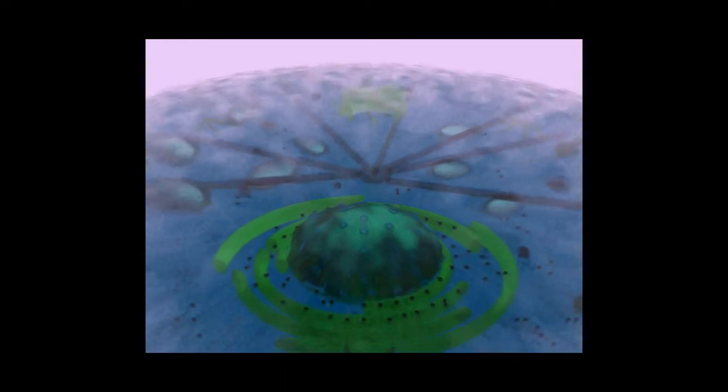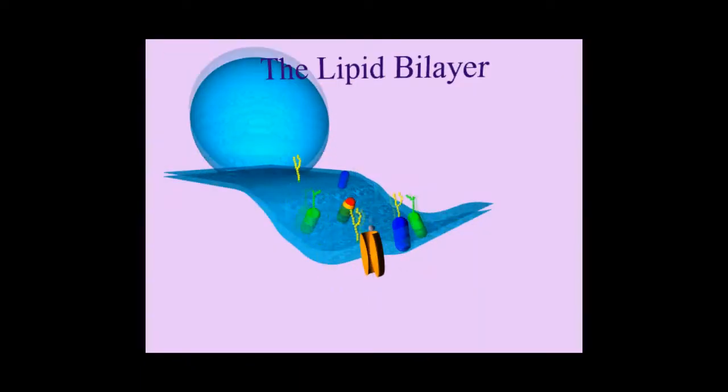The lipid bilayer acts as a barrier between the intracellular and extracellular environments, allowing molecules and proteins to enter or exit the cell through a series of channels and vesicles.